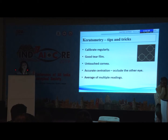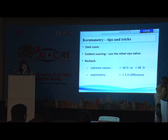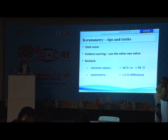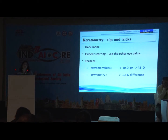Accurate centration is very important. Always occlude the other eye so that you get a central 3 mm keratometric reading. Take average of multiple readings. It should be done in a dark room. If there is corneal scarring, you can use the keratometry of the other eye. Always remember to recheck if you are getting extreme values — less than 44 diopters or more than 48 diopters — and if there is an asymmetry of greater than 1.5 diopters between the two eyes.